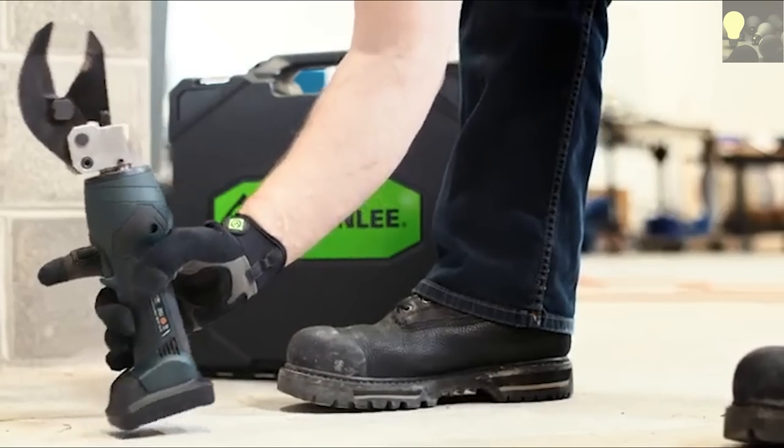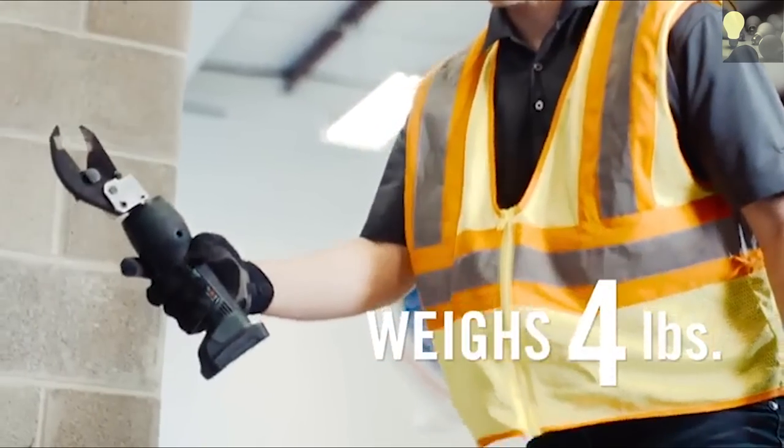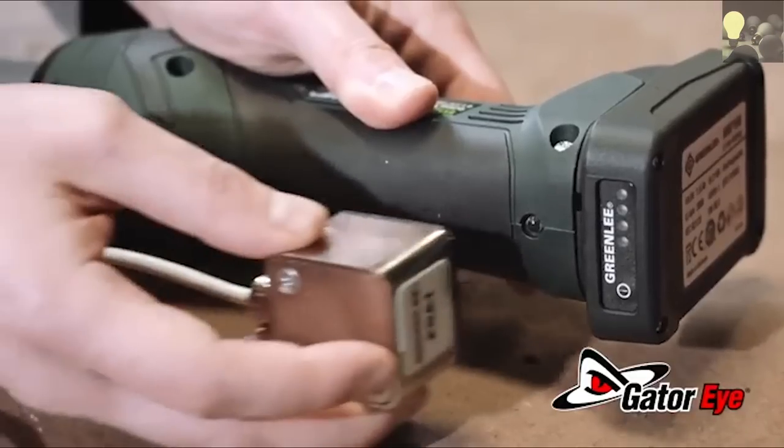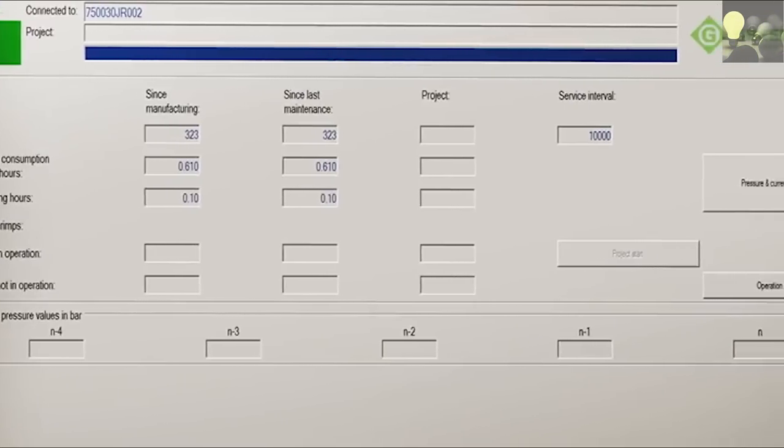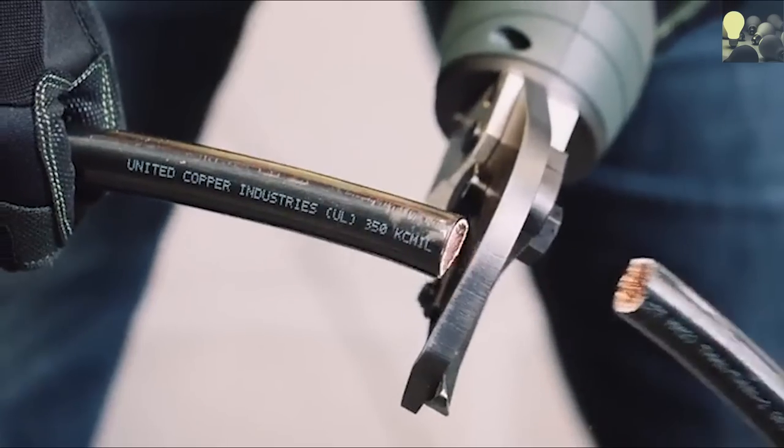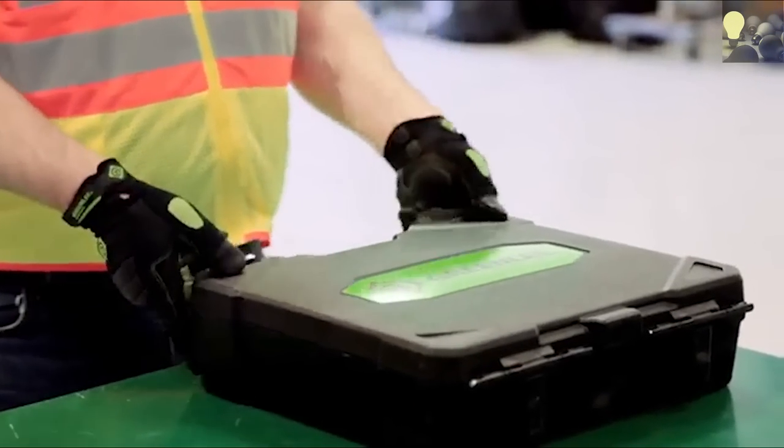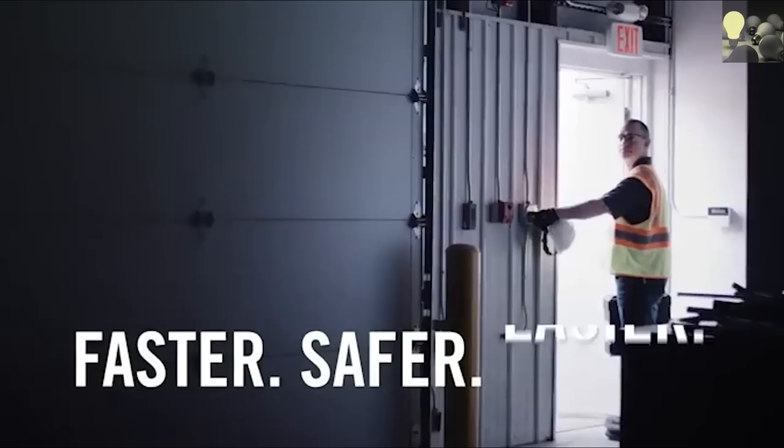And they weigh in at just 4 pounds. Plus, Gator Eye is available for all Greenlee Micro Tools to provide a work history. On a job site, you take care of everything. Now, look to Greenlee for tools that can help take care of you. Faster, safer, easier.